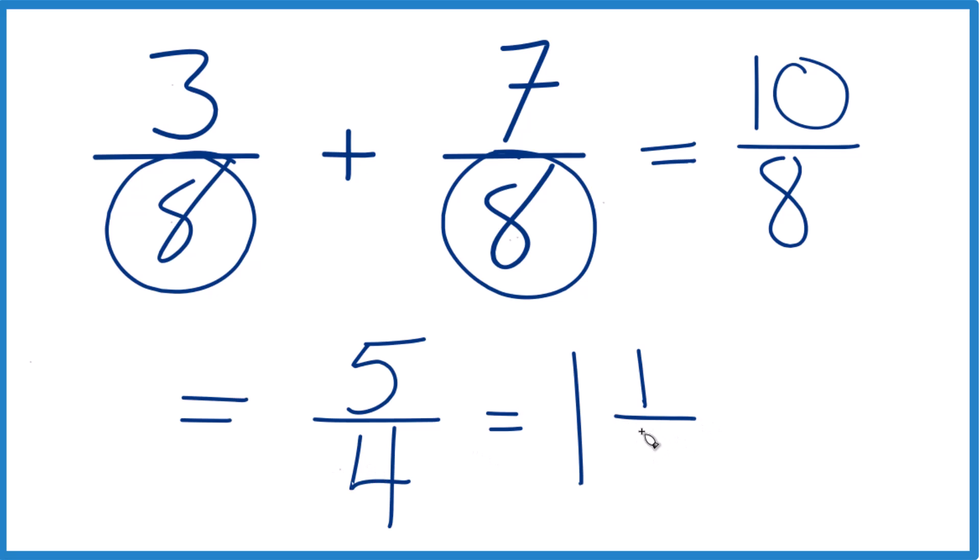And then we just bring the denominator across. You can check that. 1 times 4 is 4, plus 1, that's 5. Keep that denominator the same, 1 and 1 fourth.